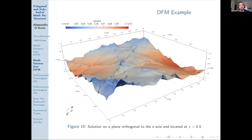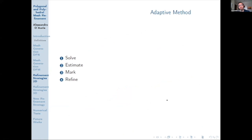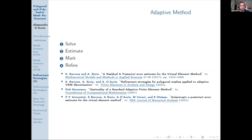This solution has been computed with a standard conforming virtual element method. Now we want to use an adaptive method because we have generated a quasi-minimal mesh for DFN and DFM. We use the solve-estimate-mark algorithm according to the approach proposed by Stevenson, followed by a refine step.